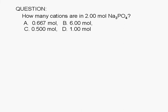How many cations are in 2.00 moles of sodium phosphate? A, 0.667 moles, B, 6.00 moles, C, 0.500 moles, or D, 1.00 moles.